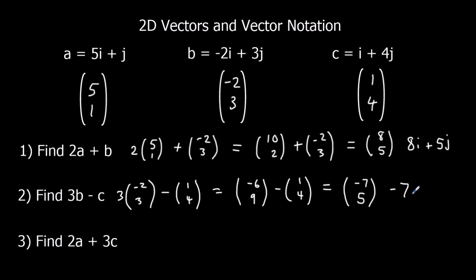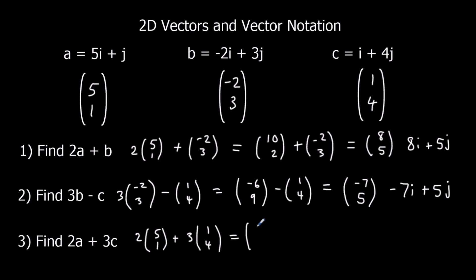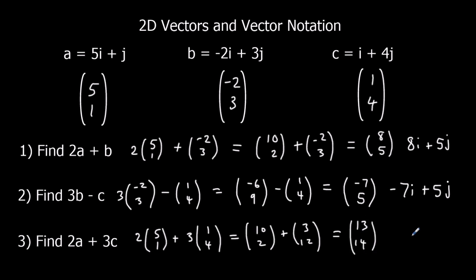And finally, 2A plus 3C. So that's 2 of the (5,1)'s plus 3 of the (1,4)'s, which is (10,2) plus (3,12). Adding along gives us (13,14), or 13i plus 14j.